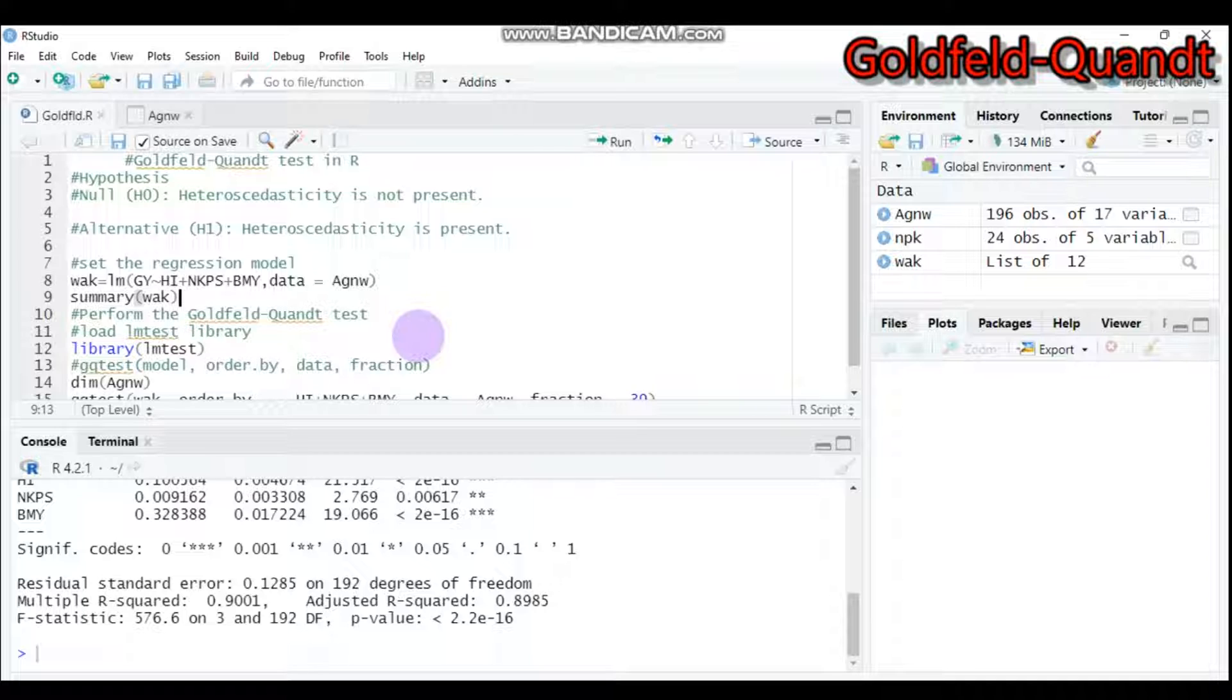Before performing the Goldfeld-Quandt test, we have to set our hypotheses. As you know, there are two hypotheses. The first one is the null hypothesis and the second is the alternative hypothesis. For the null hypothesis, there is no heteroscedasticity or heteroscedasticity is not present in our regression model. The alternative will be that heteroscedasticity is present in our model.